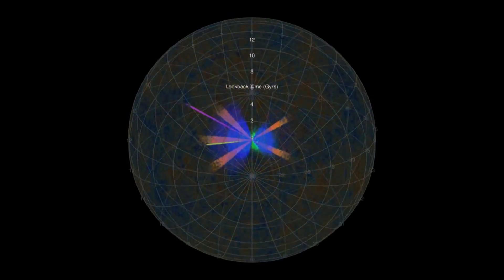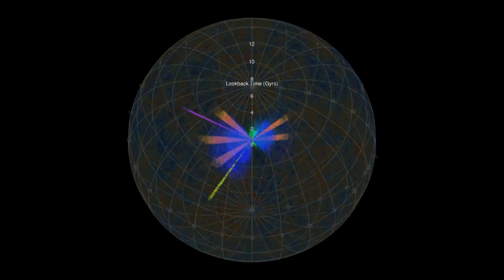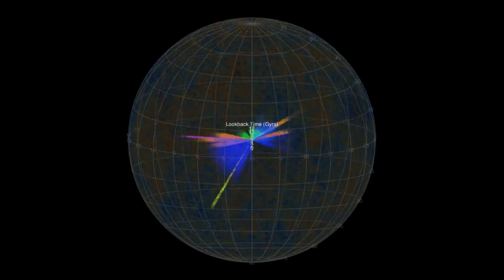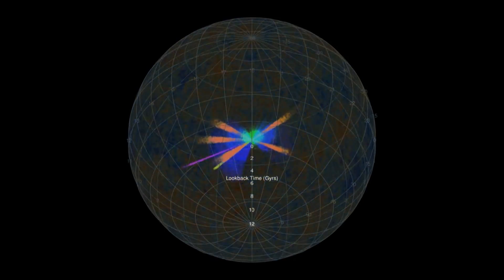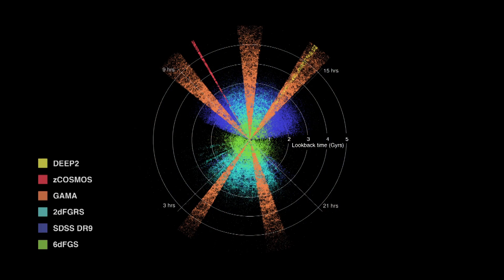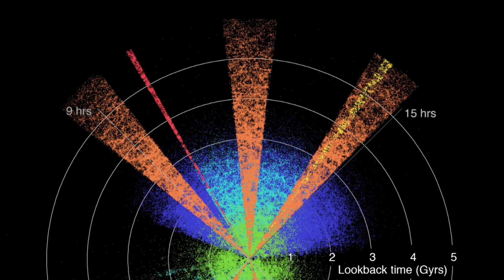A large international collaboration, the Galaxy and Mass Assembly Project, has now documented this process in action. Working with telescopes around the world and in space, they surveyed large regions of the sky, 200,000 galaxies in all.